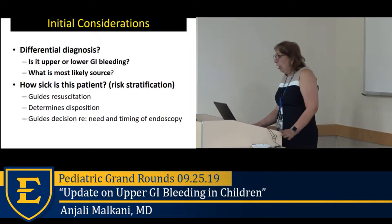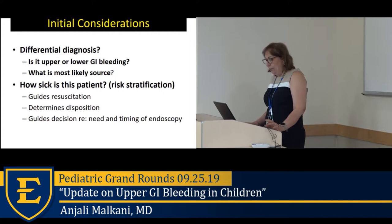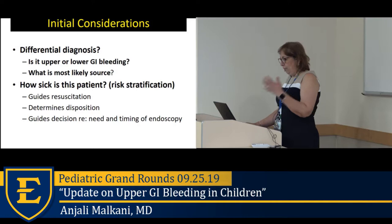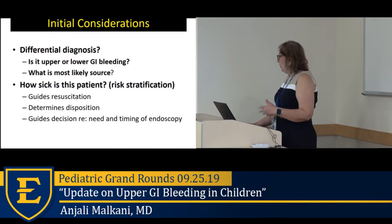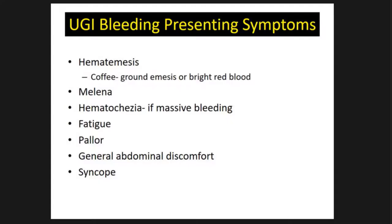When faced with a child with GI bleeding, the first question is: is this an upper or lower GI bleed? Then, what is the source? And then, how sick is this patient? Risk stratification guides how you resuscitate, where you admit the patient — floor versus PICU — and helps determine the timing of endoscopy.